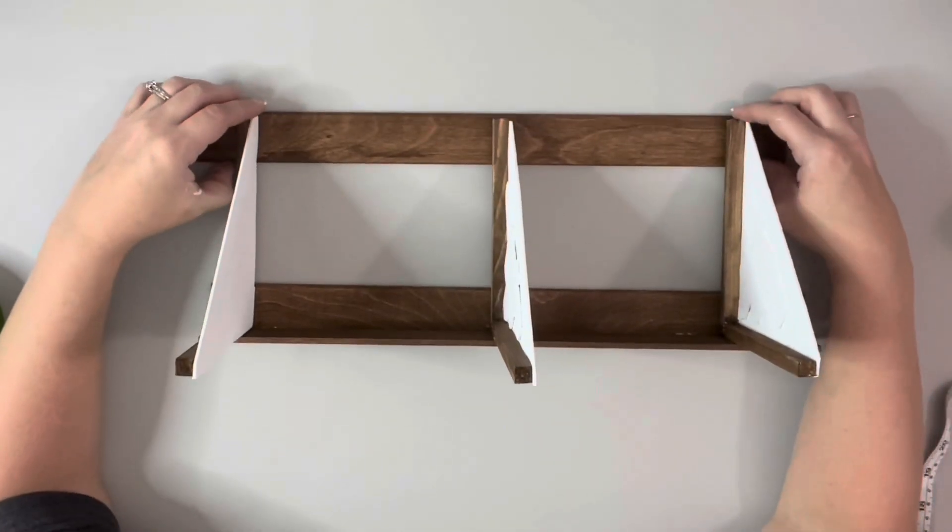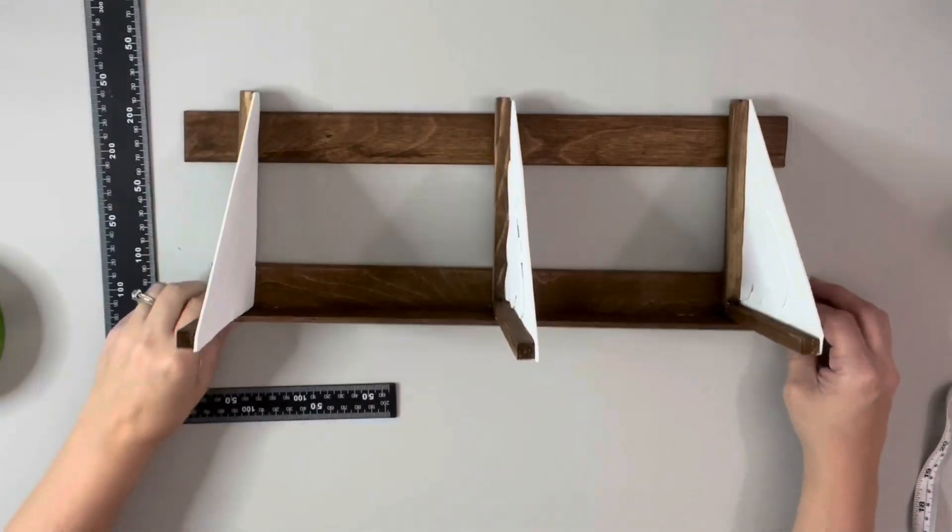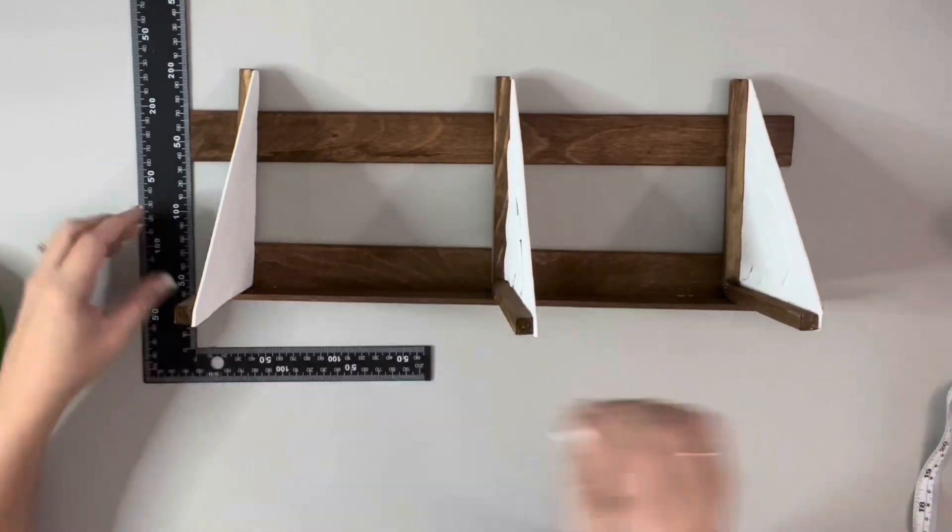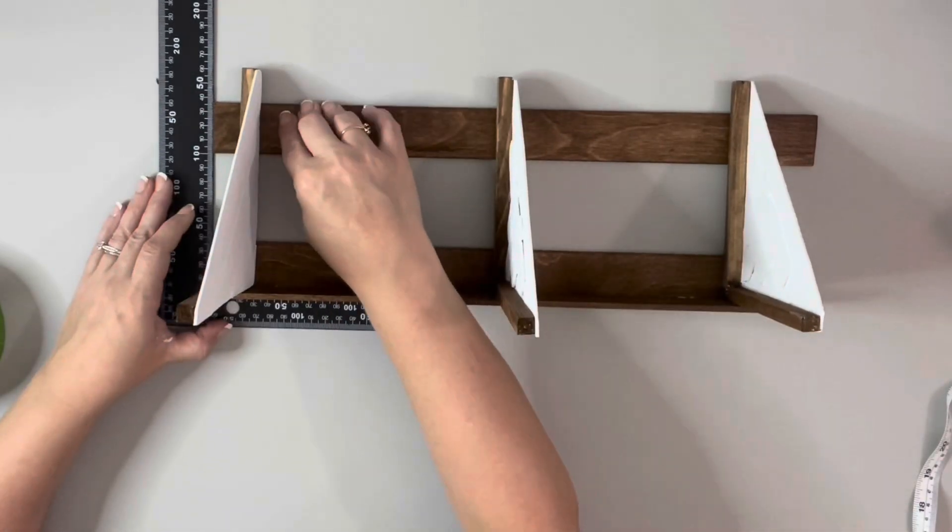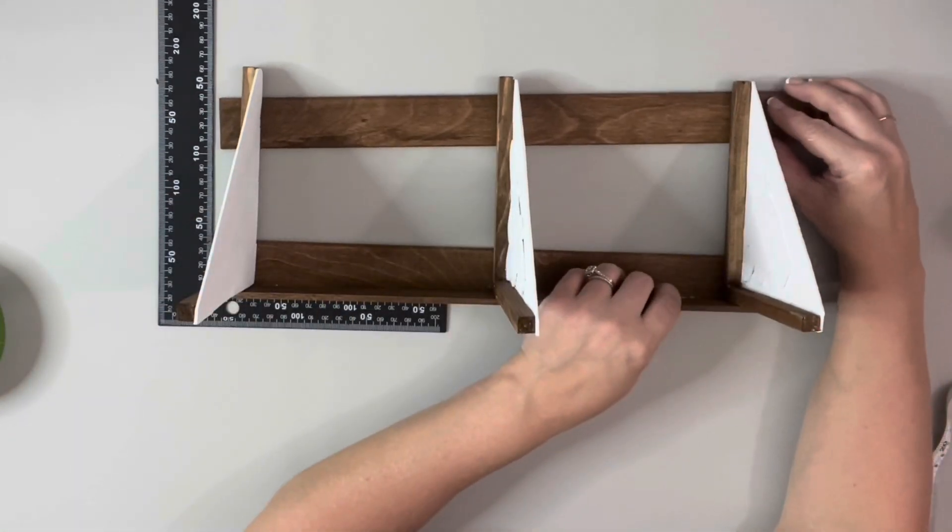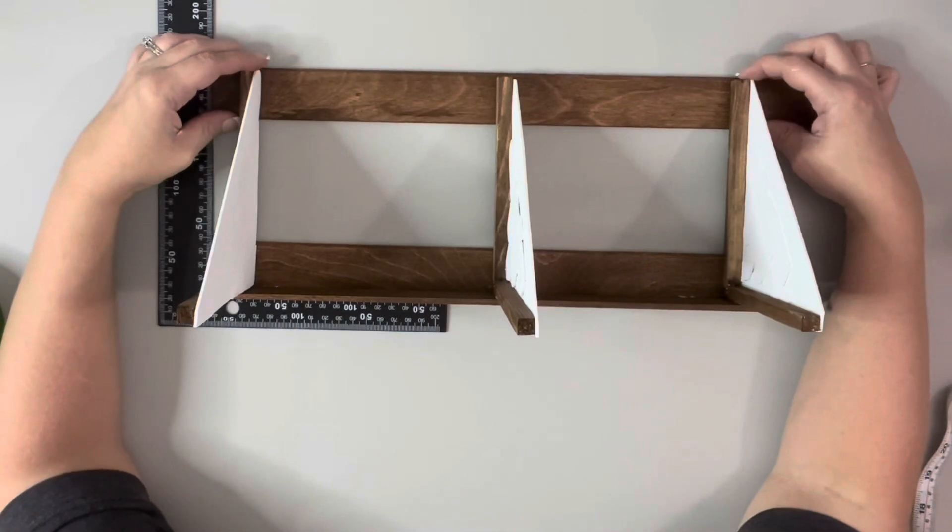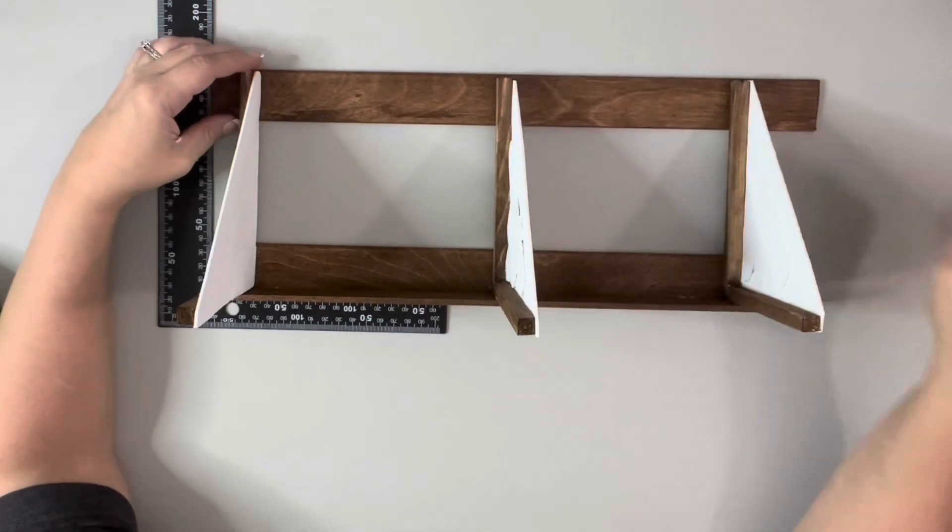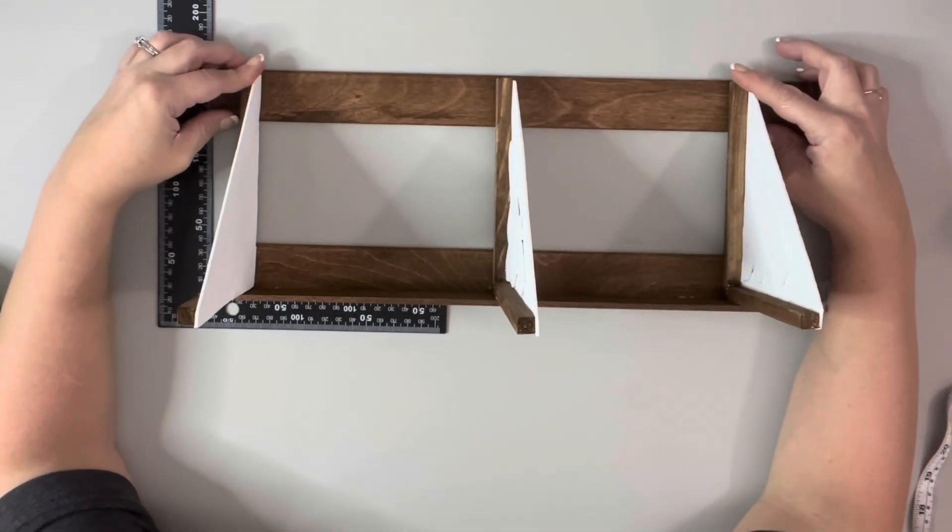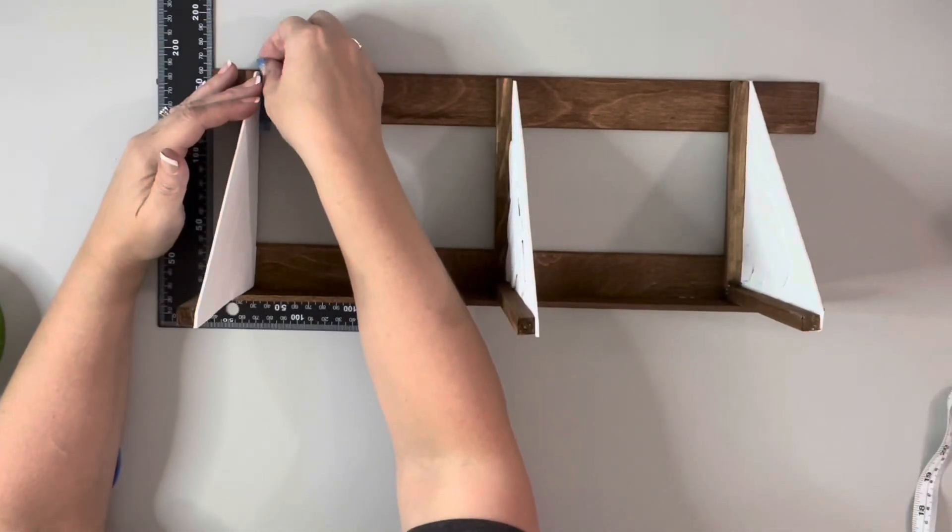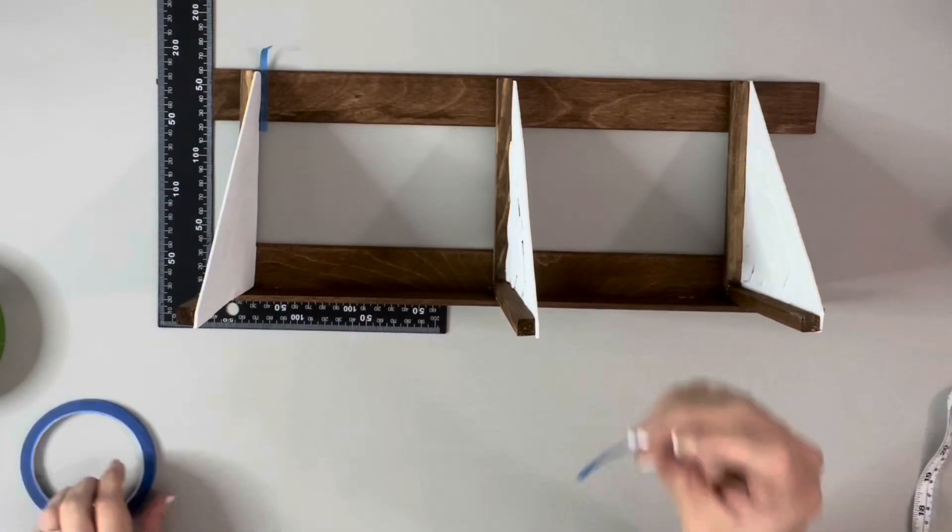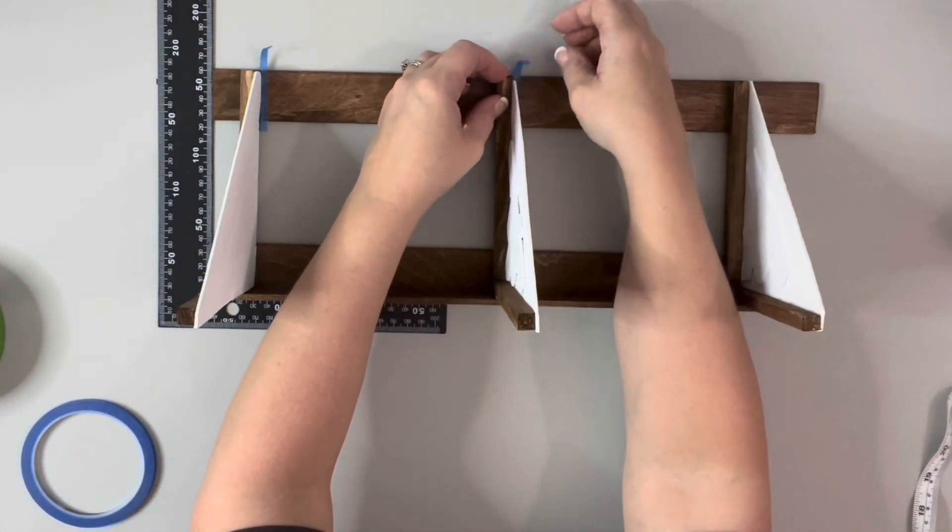Then I take another stir stick and place it on the very edge of my little shelf I made, so the end of the dowel, and I just use a square to line up the stir stick so the spacing is right and so that it'll be level. Once I have the edges straight with each other, I take painter's tape and place it where the shelves meet that stir stick.